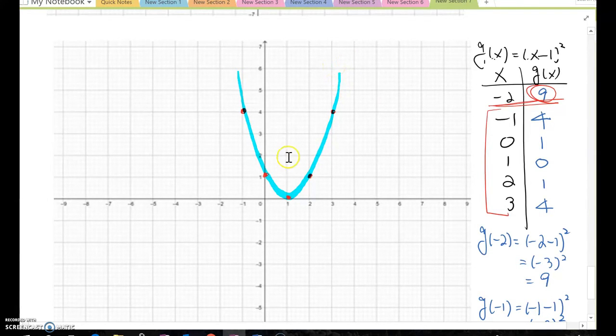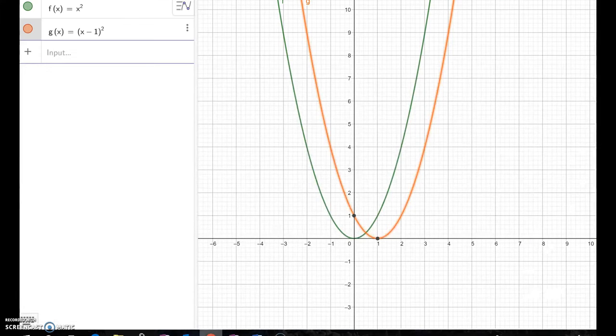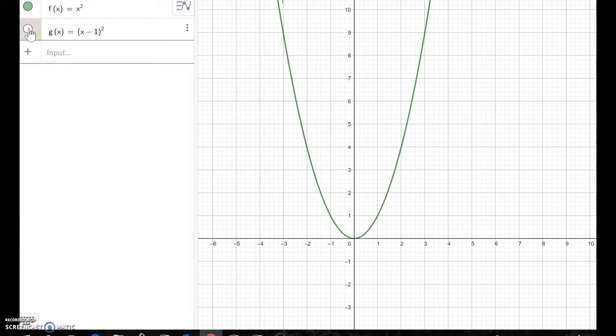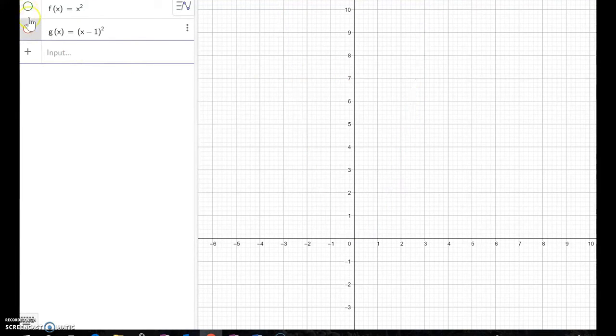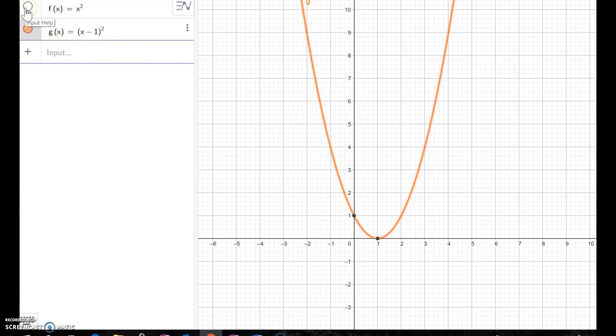So look at the GeoGebra here. First of all, f(x) equal to x² is this one. And then g(x) = (x-1)² is this one. Do you see some difference here? Let me display both graphs on the same plane graph paper. The green one shows the parent function y = x². The orange one shows g(x) = (x-1)².